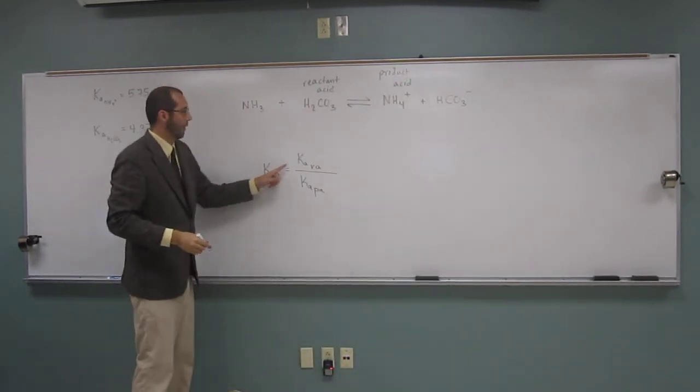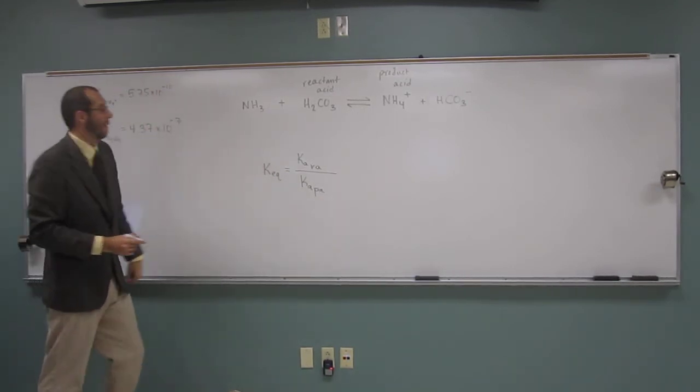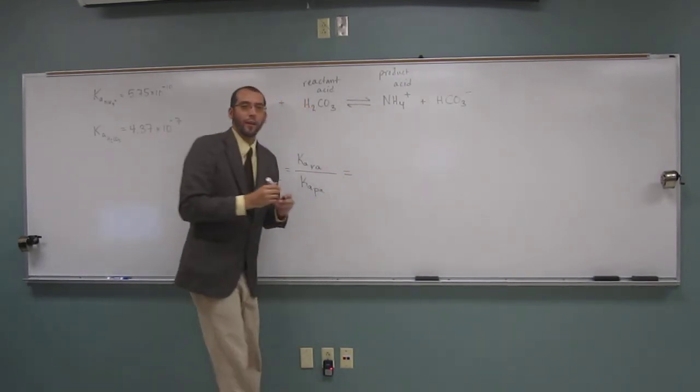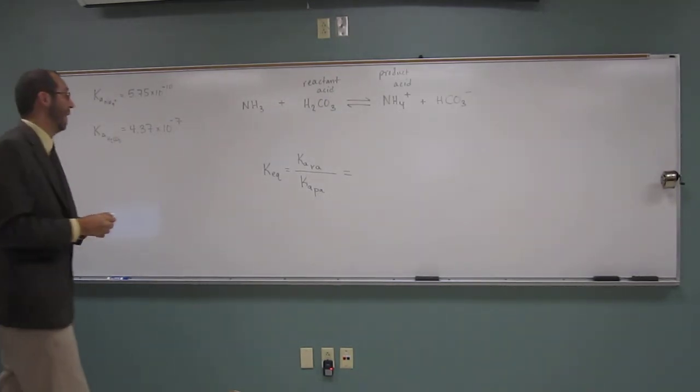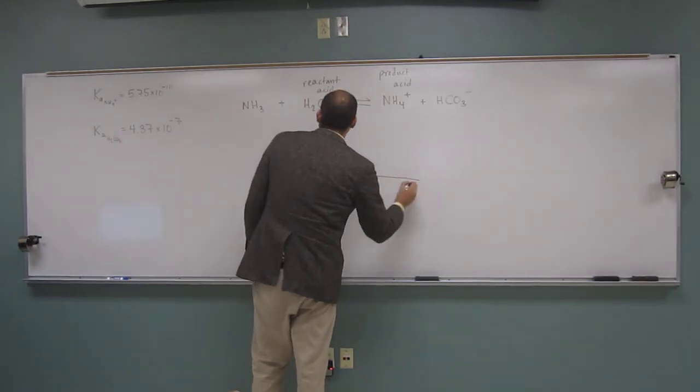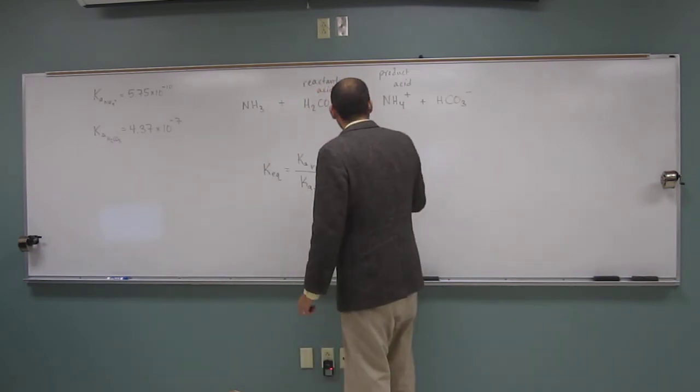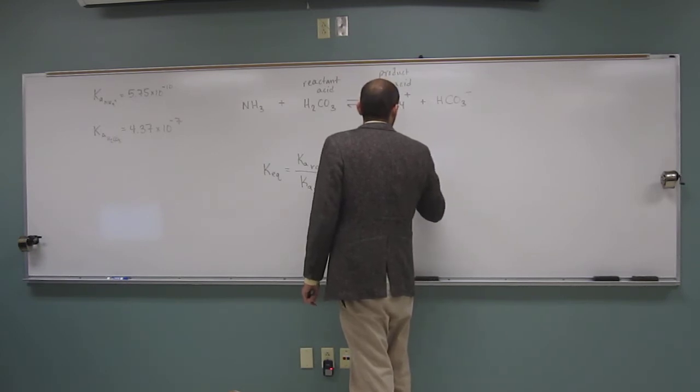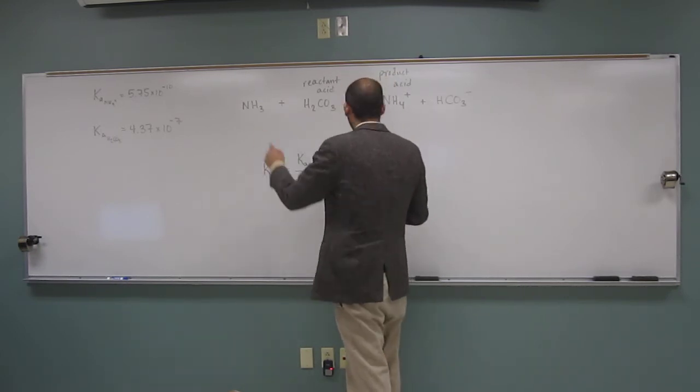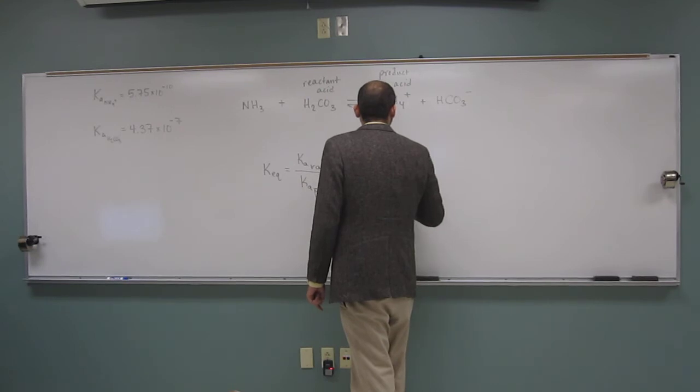And the cool thing about when they give us the Ka's is we don't have to translate from the pKa's to the Ka's. So this is more like a plug and chug type thing, but you do need to have a calculator. So the Ka of the reactant acid is going to be this one, 4.3 times 10 to the negative 7th. And the Ka of the product acid is 5.75 times 10 to the negative 10th.